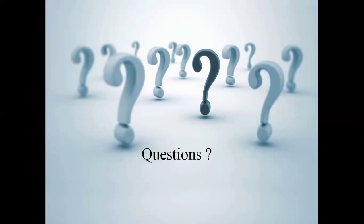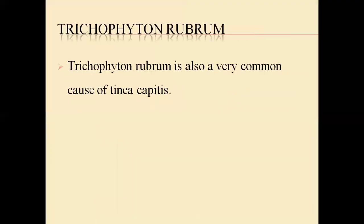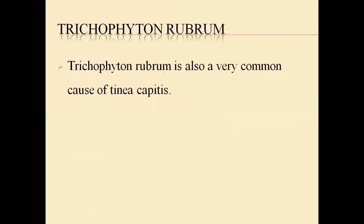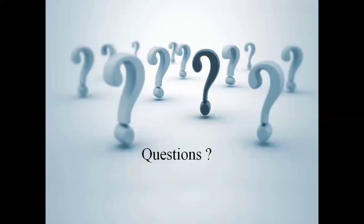In this way we have tinea cruris and tinea corporis. All these types represent different forms of dermatophyte infection affecting different body regions, which we studied about in this lecture.